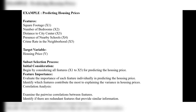Let's look at an example: predicting housing prices. The features are: square footage (x1), number of bedrooms (x2), distance to city center (x3), presence of nearby schools (x4), and crime rate in the neighborhood (x5). These are all the features for predicting house price — if you are buying a house you need to check all these features. The target variable is the housing price — our target is to find the price of the house.